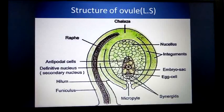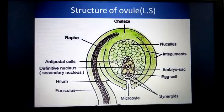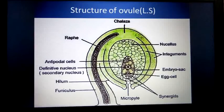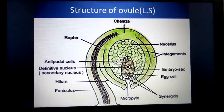In this video I am going to explain about the structure of the ovule. The ovule is otherwise known as megasporangium. This is the longitudinal section of the ovule. This is an anatropous ovule — it is called anatropous because the body of the ovule is inverted. If it were orthotropous, the body of the ovule would be straight, but here it is inverted, so it is known as anatropous ovule.